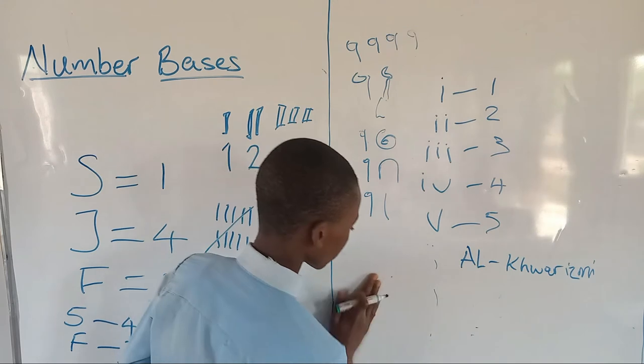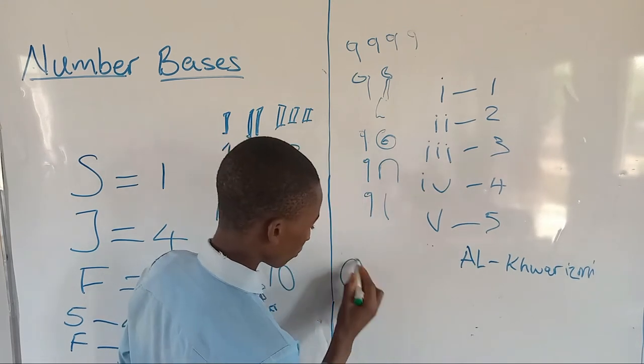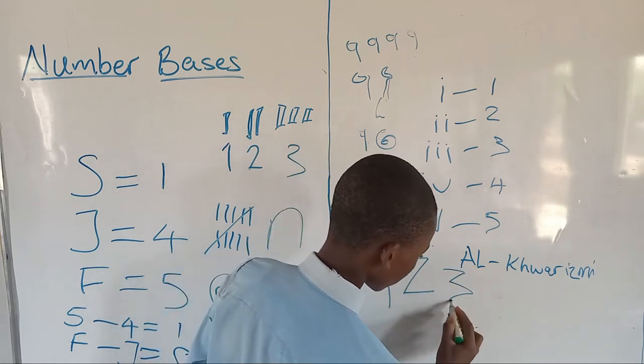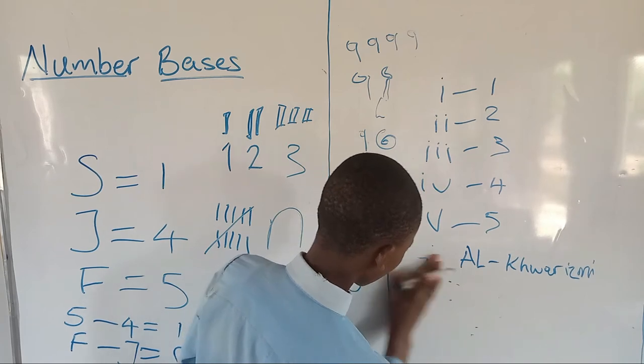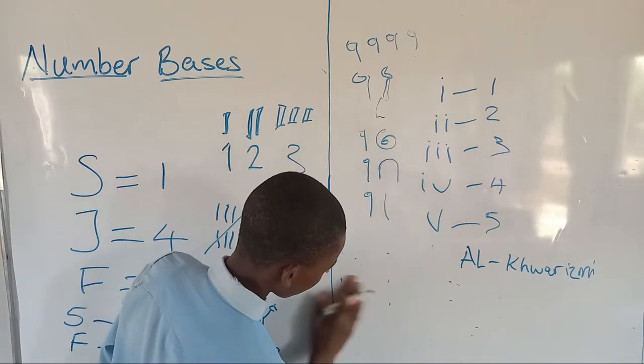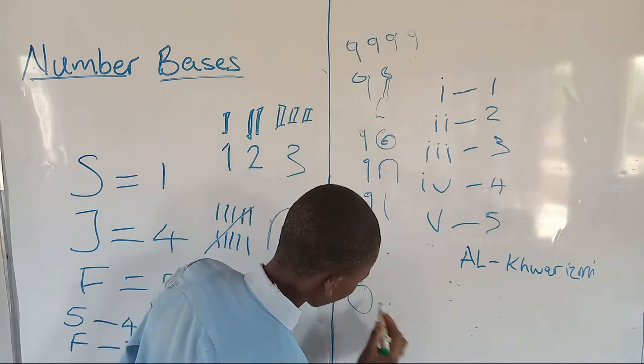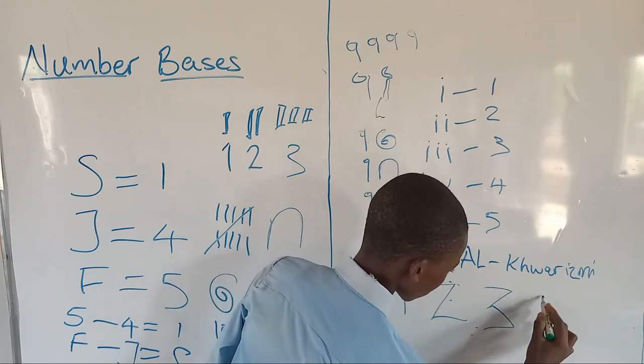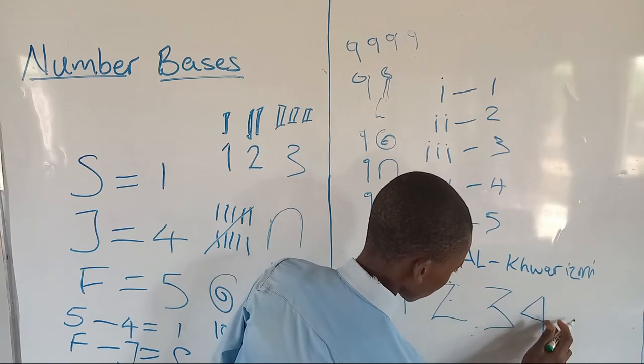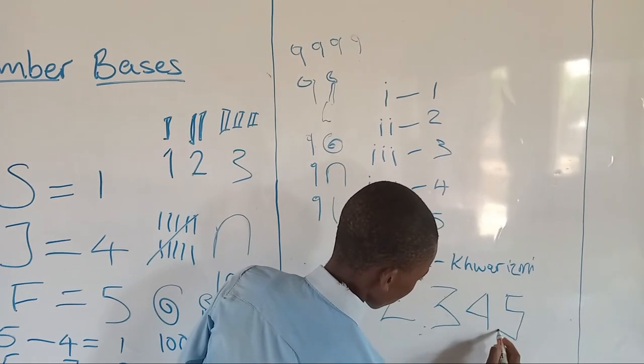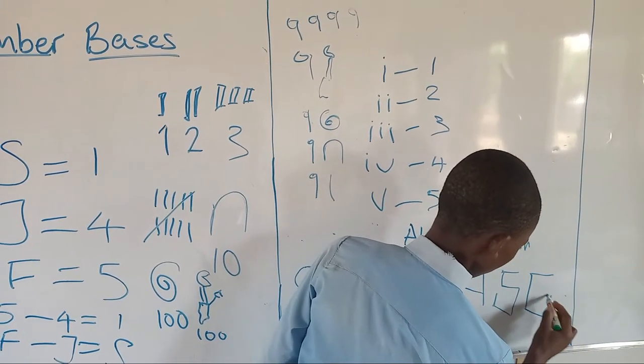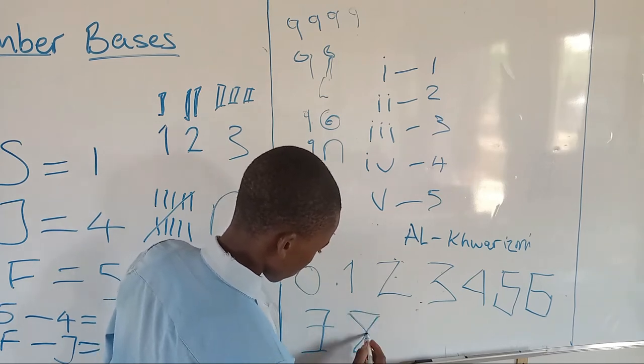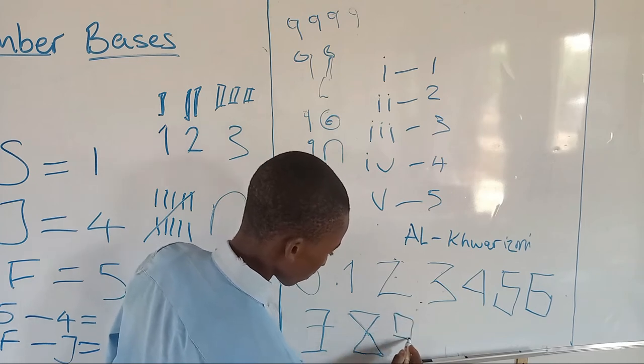It was written as 0, 1, 2, 3, 4, 5, 6, 7, 8, and then 9.